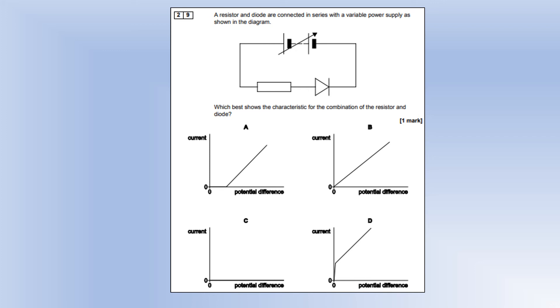A resistor and a diode are connected in series with a variable power supply. Which best shows the characteristic for the combination? We know a diode doesn't allow current to flow until you reach a certain potential difference. That wouldn't change because you have a resistor in series with it. So option A, it's going to look like a diode circuit to start off with. But once the diode is activated, it's going to look kind of like a normal ohmic conductor circuit.